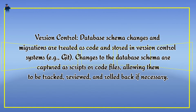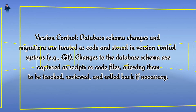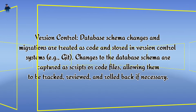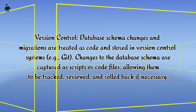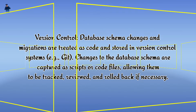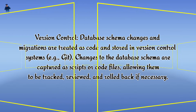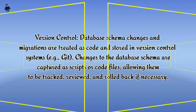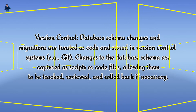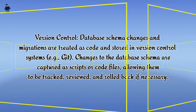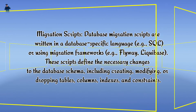Database schema changes and migrations are treated as code and stored in version control systems, for example Git. Changes to the database schema are captured as scripts or code files, allowing them to be tracked, reviewed, and rolled back if necessary. 2. Migration scripts.